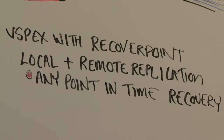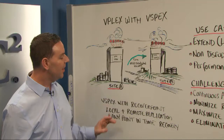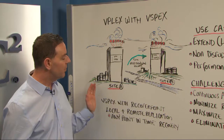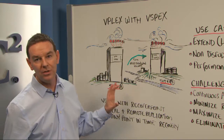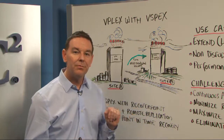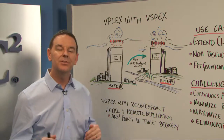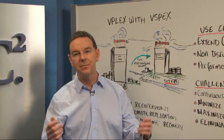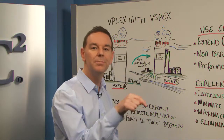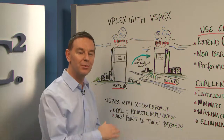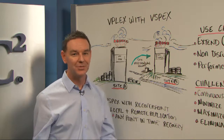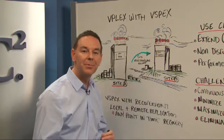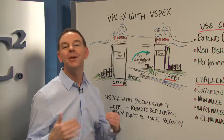vPlex with RecoverPoint is another great solution from EMC that will help you address your business continuity and high availability needs. vPlex with RecoverPoint enables local and remote replication. RecoverPoint is very similar to a DVR — if you step out and miss something, you can return to any given point in time. The same is true for your applications, which is probably more important than that movie. If there's an outage, you can roll back the environment to a given point in time and pick up where you left off.